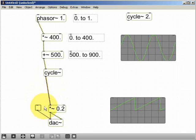In other words, the frequency rises to a maximum, then drops back to its minimum value instantaneously, following the wave shape of the phasor object.